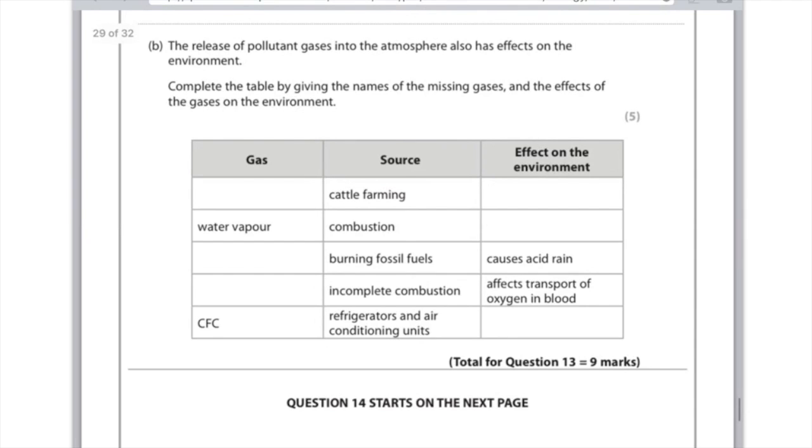Next up, burning fossil fuels. The gas produced here is going to be a pollutant gas, and it could either be sulfur dioxide or nitrogen oxides. Remember, they dissolve in water to form acid rain, so that's going to be the effect on the environment, which they've actually told us. Incomplete combustion: the key word is incomplete. That produces carbon monoxide, and we can see the clue is that it affects the transport of oxygen in the blood.